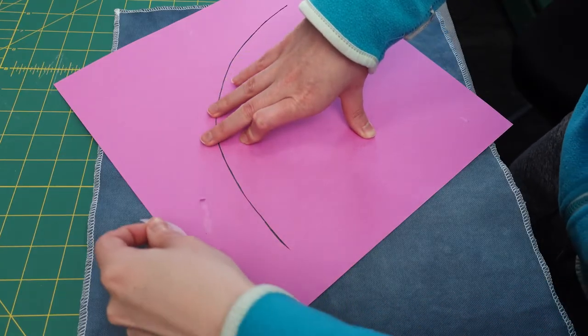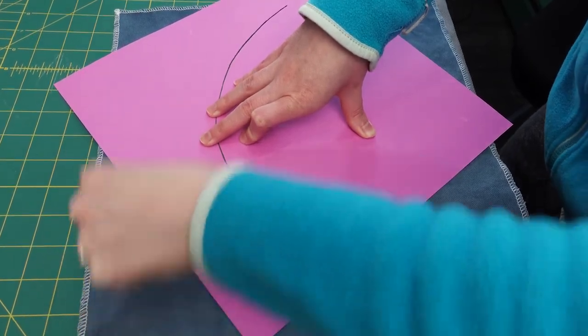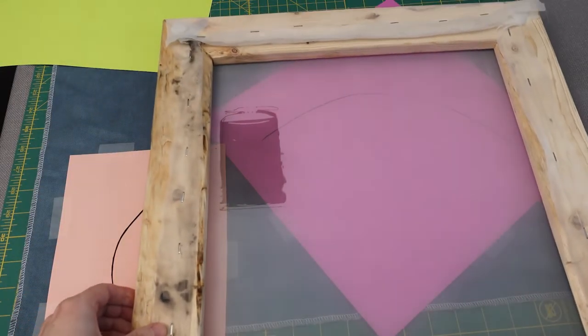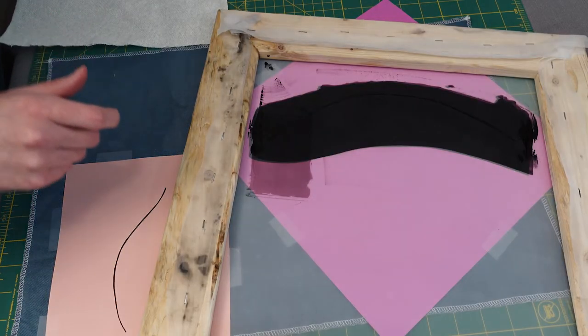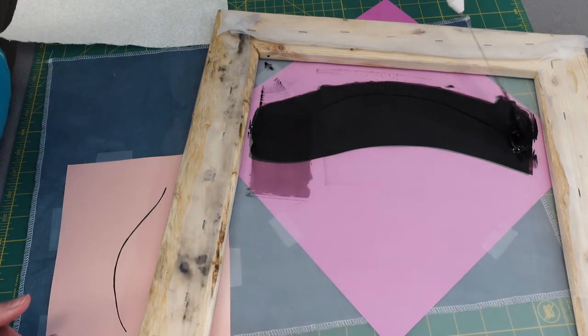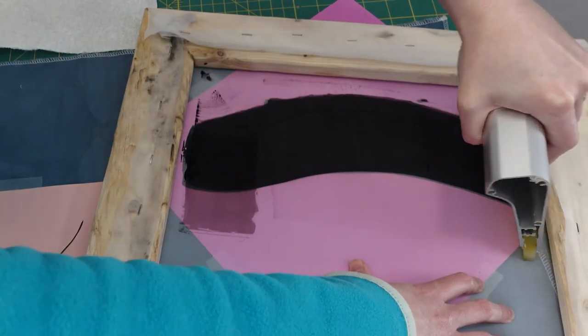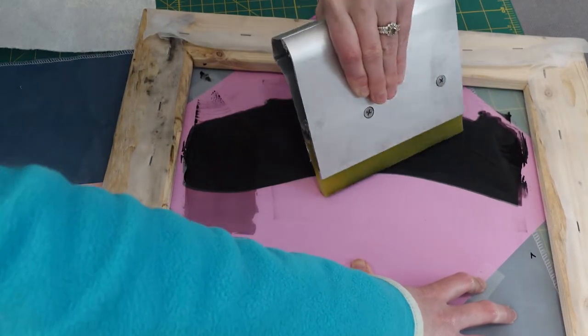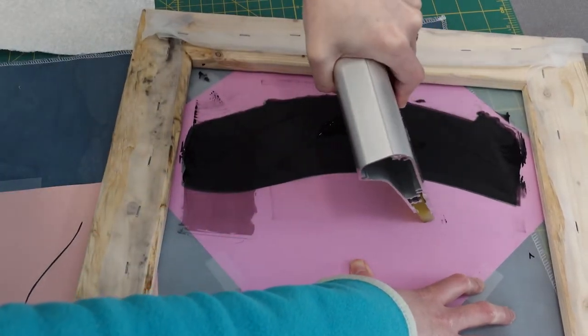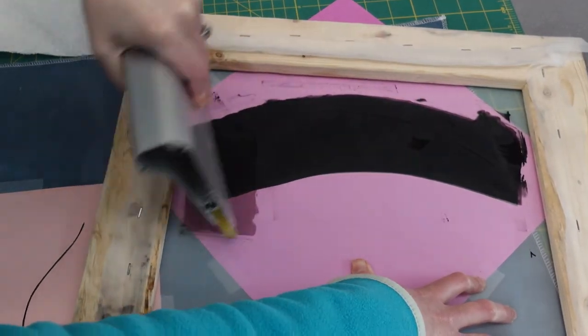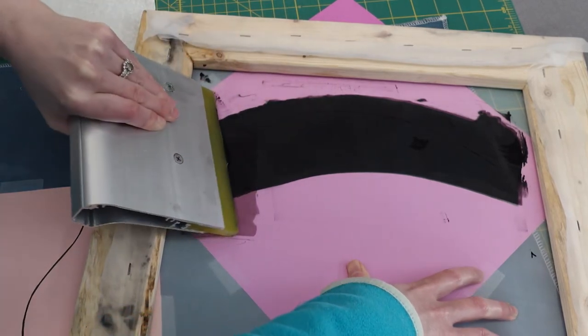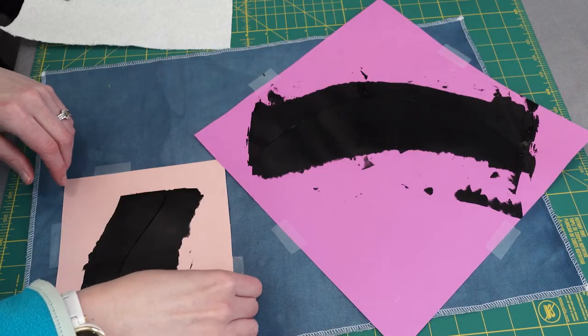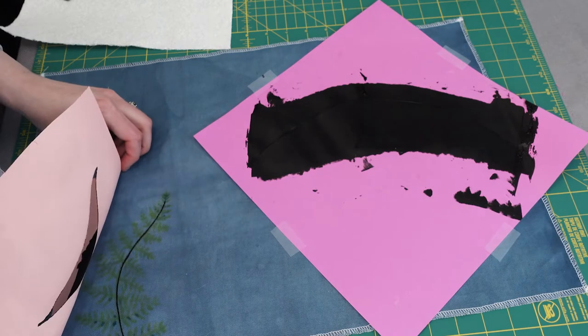Then I taped the cardstock to the fabric so it wouldn't move. I'm using a water-based screen printing ink by Permaset for this project. I had never used this method before, so it took a lot more pressure than when I've screen printed the traditional way, so maybe next time I'd use thinner paper for my stencil. The small leaf turned out great, but the larger one had issues.